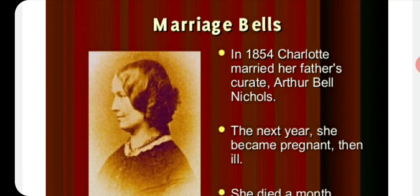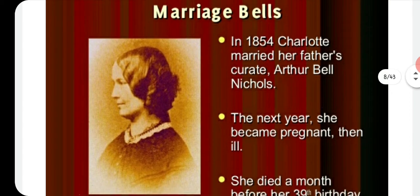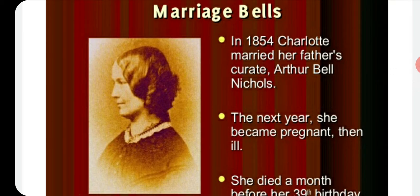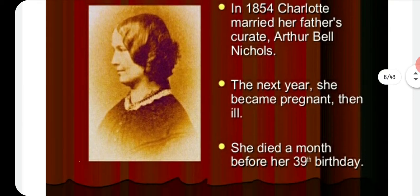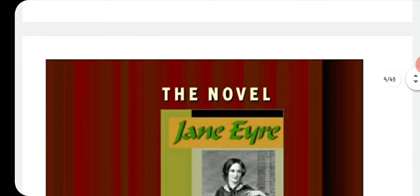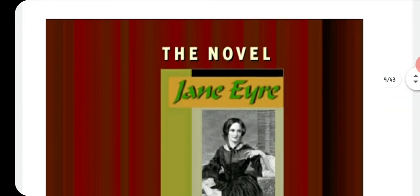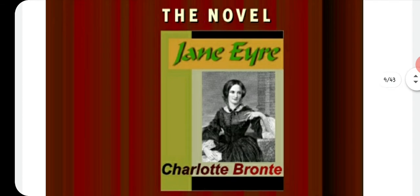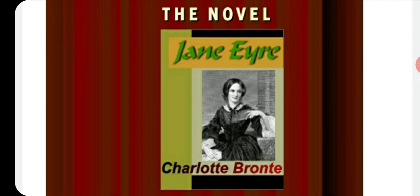In 1854, Charlotte married her father's curate, Arthur Bell Nicholls. The next year she became pregnant and fell ill. She died a month before her 39th birthday, leaving behind her famous novel Jane Eyre.